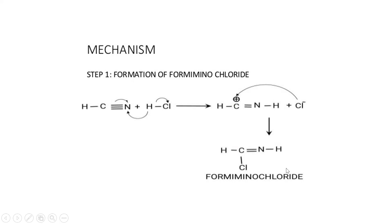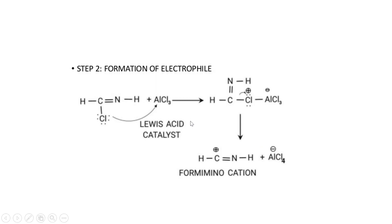Step 2 involves AlCl3. What is AlCl3? It is your Lewis acid catalyst. You know that chlorine has lone pairs. AlCl3 is electron deficient, so it is a Lewis acid. The lone pairs will attack AlCl3.